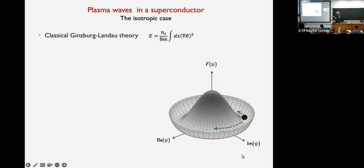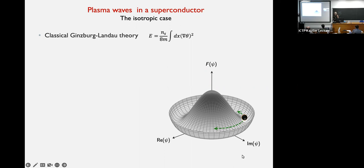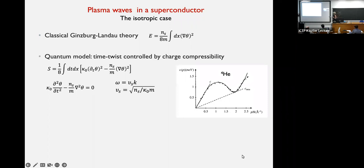In the superconductor the phase is rigid, and we can measure phase fluctuations that we cannot do in a metal. From Ginzburg-Landau theory, the energy cost of spatial phase fluctuations has a gradient term whose coefficient is the phase stiffness — the ratio between superfluid density and electron mass. For the dynamics we need time dependence: the coefficient of the phase twist in time is the charge compressibility, since charge and phase are conjugate variables, and the time derivative of the phase is connected to the chemical potential.